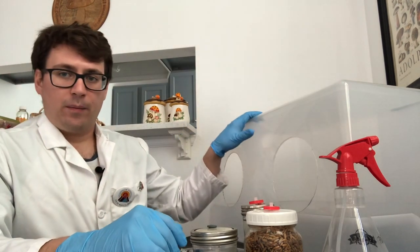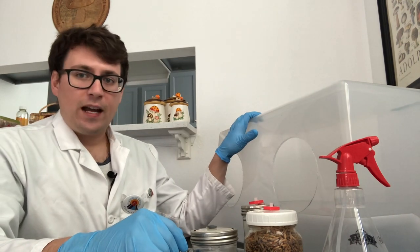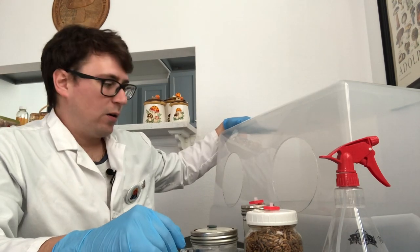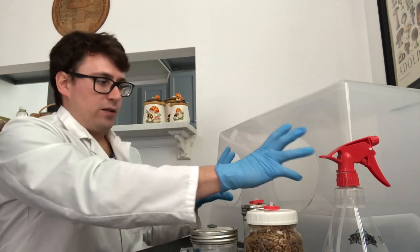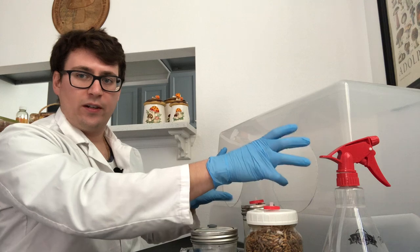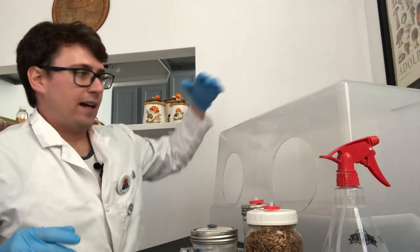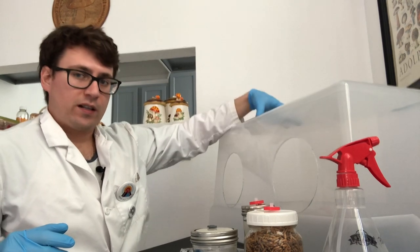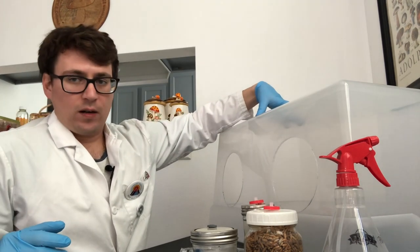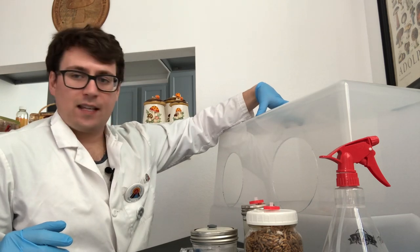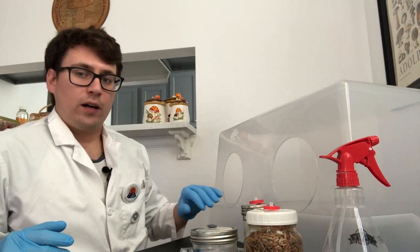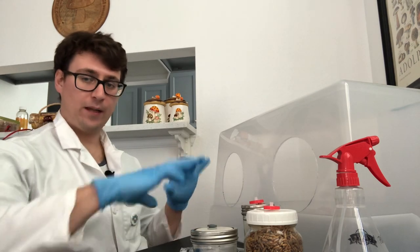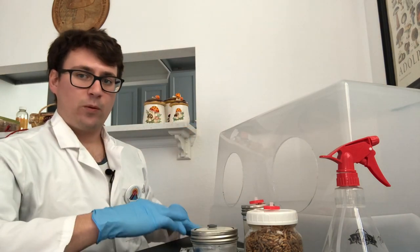So I have what is called a still air box or SAB here next to me. This is just a tote that has two six inch holes drilled out for your hands and the idea is that it will prevent any airflow around your workspace. It doesn't create a sterile work environment or aseptic like a laminar flow hood, but it does prevent dust particles from the environment from dropping onto your workspace.